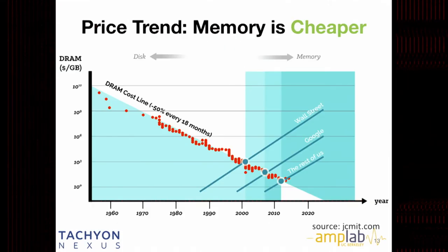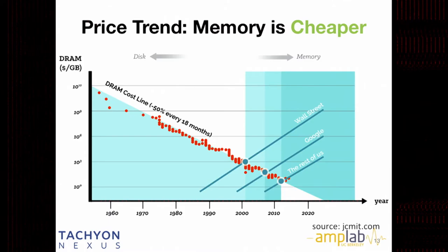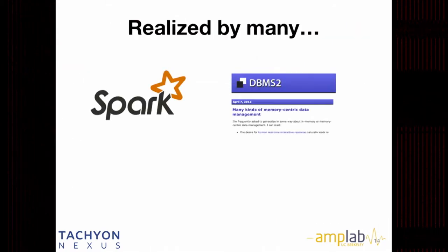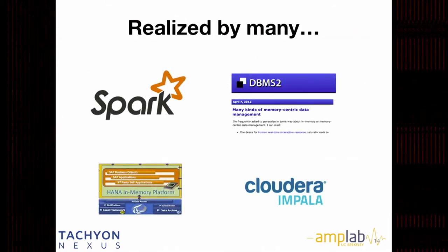The second reason is price trend. Memory is getting cheaper and cheaper — DRAM price decreases around 50% every 18 months. As you can see from this figure, in the early 2000s companies from Wall Street started to embrace memory technology aggressively, then companies like Google and Baidu, and now the rest of us are embracing it aggressively as well. This trend has been recognized by others too — Apache Spark from our lab, HANA in-memory database, and others.